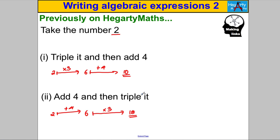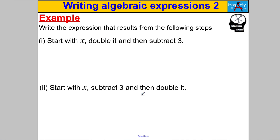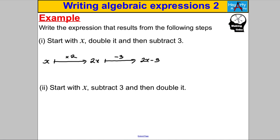Example: start with X, double it, and subtract 3. Here's our X — we're going to double it, so multiply it by 2, and we get 2x. Then we subtract 3, and we get 2x subtract 3. So that's our expression for those steps: 2x subtract 3.